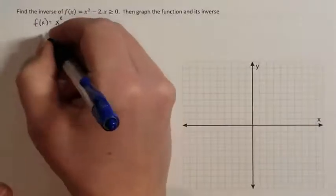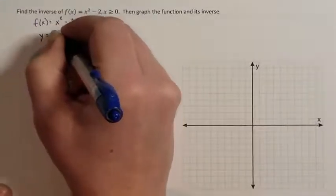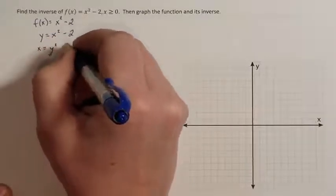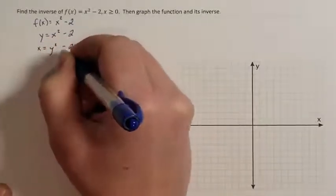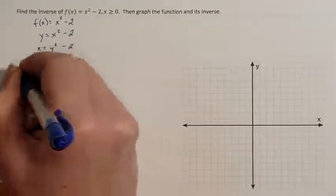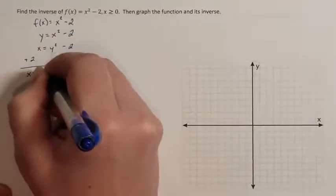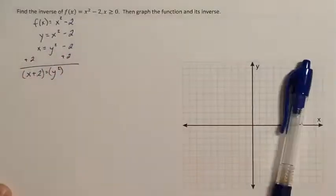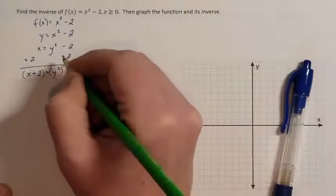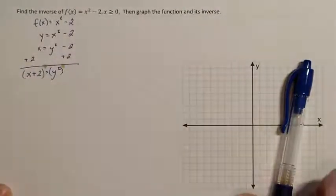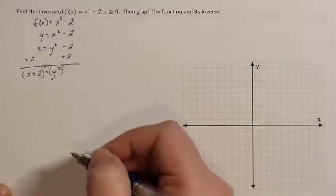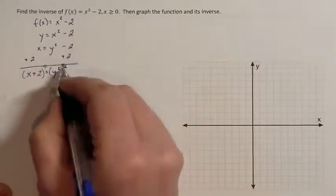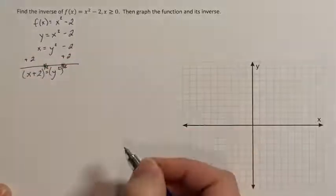To find the inverse I need to replace f of x with y equals and now I need to switch the x and the y's. So here's me switching my x and my y's and now I need to solve for y. So I'm going to add 2 to each side. X plus 2 is y to the second power. I need to raise both sides to an exponent to where when I multiply these two exponents together they would turn to 1 and cancel each other out. 2 times 1 half would multiply together to cancel each other out. So we're going to raise each side to the 1 half.